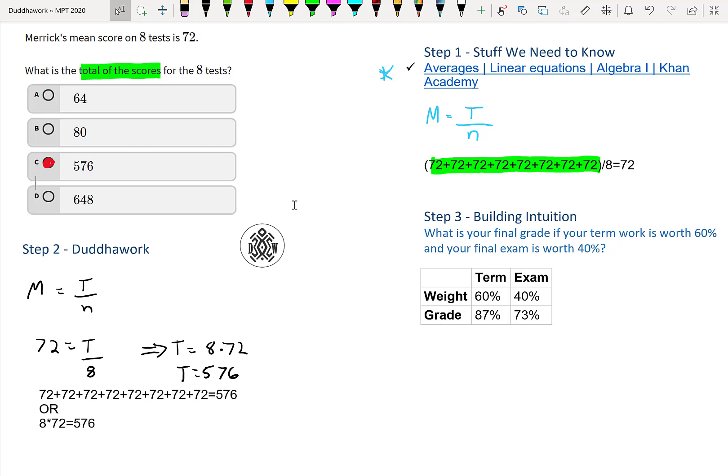Now for step three is to build your intuition. So let's go a little bit beyond the problem to extend the understanding of average and how to calculate grades. What is your final grade if your work term is worth 60% and your final exam is worth 40%? These are the grades that you got.